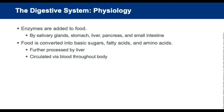Digestion is completed by chemical processes. Enzymes added by the salivary glands, stomach, liver, pancreas, and small intestines convert food into basic sugars, fatty acids, and amino acids. These products of digestion are carried across the intestinal wall to the liver, then transported to the heart and circulated via the blood throughout the body.